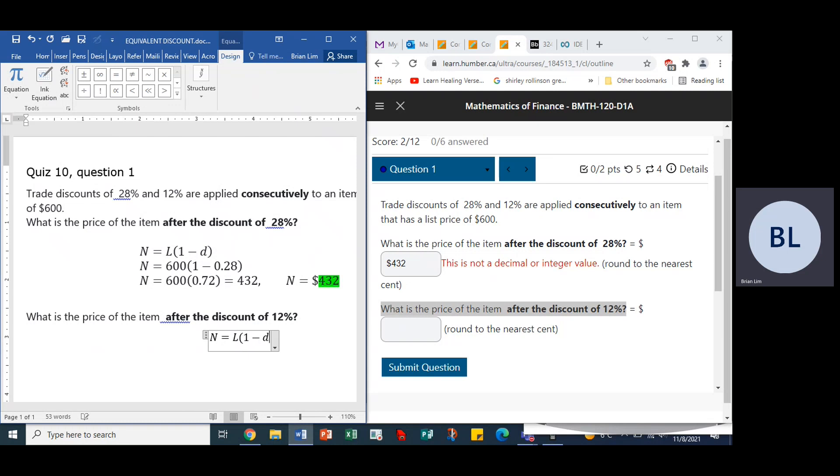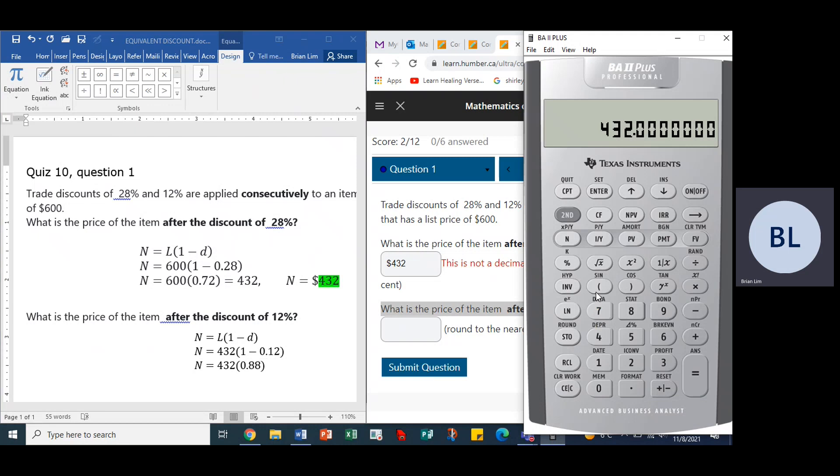N is there. L is now $432, no longer $600, and the discount is one minus 12%, so it'll be 0.12. We could go N equals 432 times 0.88. We can get the calculator up and go 1 minus 0.12, and indeed it shows us 0.88.